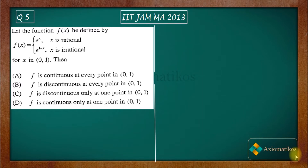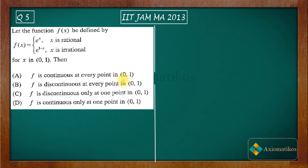Hello dear students, welcome to the Axiometric course. This video is part of the solution series for IIT JAM 2013. We are here with Problem 5 of your paper — a problem from analysis. Let us first have a look: the function f(x) is a multivalued function defined as e^x when x is rational, and e^(1-x) when x is irrational, for x in [0,1]. Options suggest: (A) f is continuous at every point in [0,1], (B) f is discontinuous at every point in [0,1], with options (C) and (D) being similar variations. So now let us start.